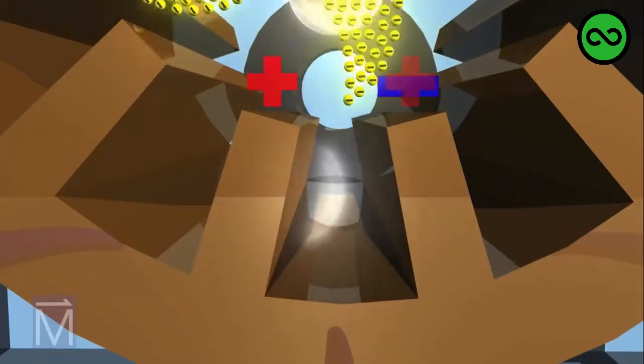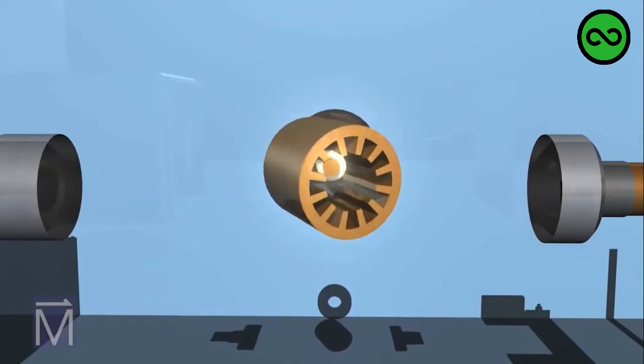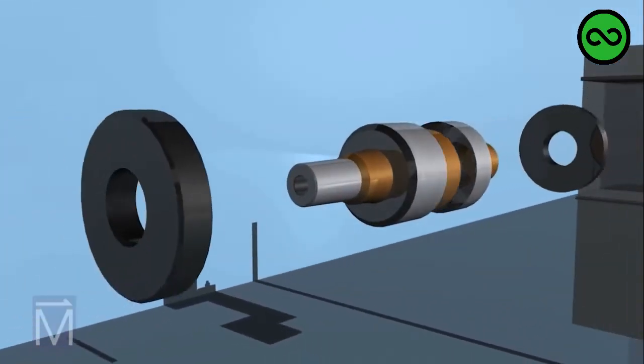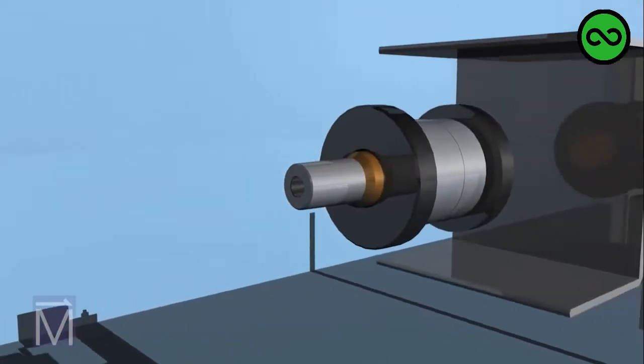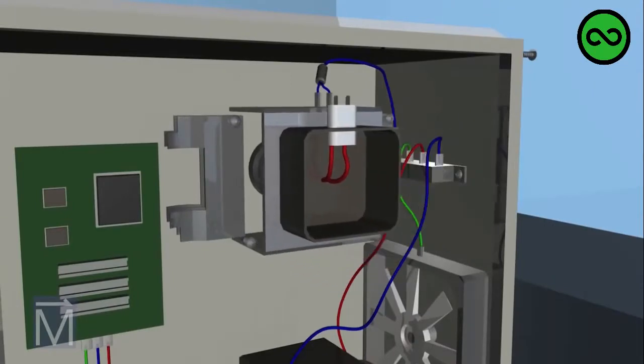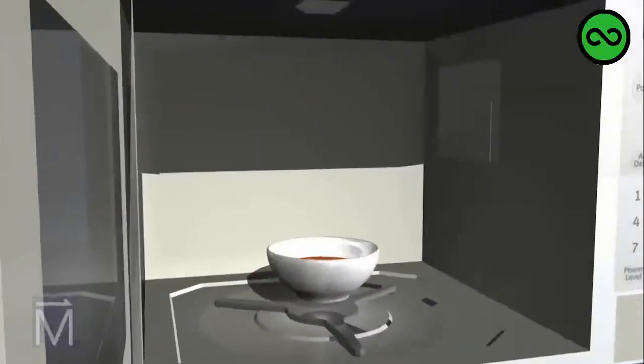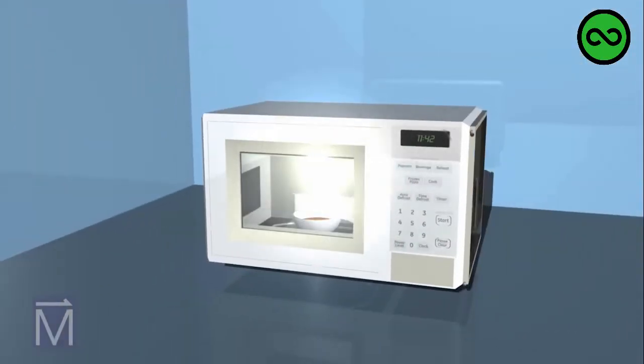...it creates an electromagnetic wave inside that groove of a very particular frequency: a microwave. An antenna directs those microwaves into a waveguide, which then delivers them to the chamber where the food is. The microwaves bounce back and forth between the chamber's metal walls, heating up the food. How exactly do microwaves cook the food?